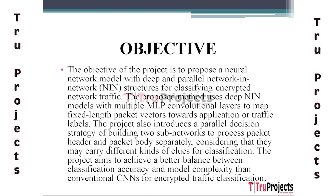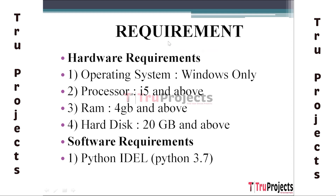Objective: The project's objective is to suggest a neural network model for categorizing encrypted network traffic that has deep and parallel NIN architecture. The suggested method maps fixed-length packet vectors to application or traffic labels using deep NIN models with several MLP convolutional layers. Additionally, the project introduces a parallel decision technique involving two sub-networks to process packet header and packet body separately, seeking a better balance between classification accuracy and model complexity compared to typical CNN.